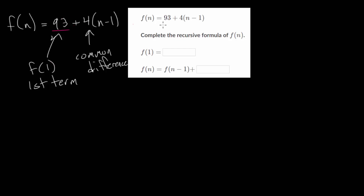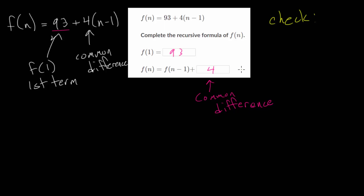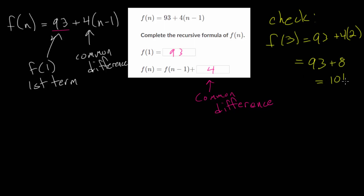We can use this information to create the recursive formula. We know the first term is 93, so we can put that in. With the recursive formula, to find the nth term, you take the term before it and add the common difference. Since we found the common difference to be 4, we can plug 4 in. To check this, let's use our explicit formula to find the third term: 93 plus 4 times 3 minus 1, which is 2, gives us 93 plus 8, so the third term should be 101.